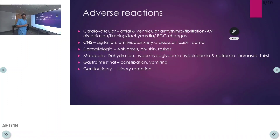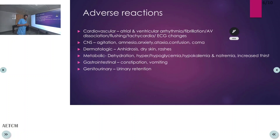Regarding adverse reactions following atropine administration: the cardiovascular system may show atrial or ventricular arrhythmias, fibrillation, AV dissociation, flushing, tachycardia, and sometimes even bradycardia. ECG changes such as junctional rhythm can also be seen.